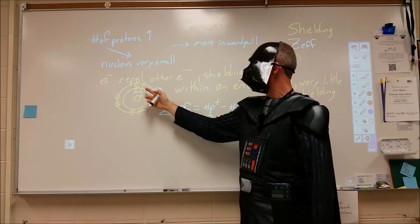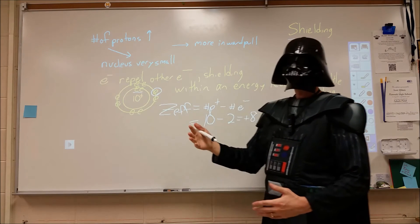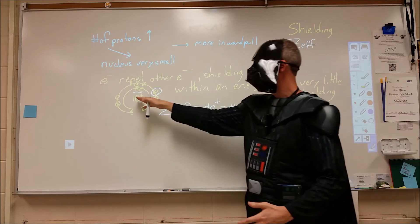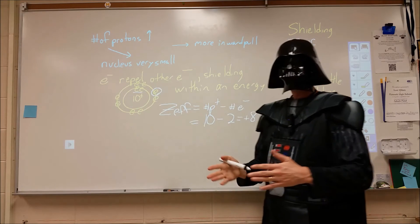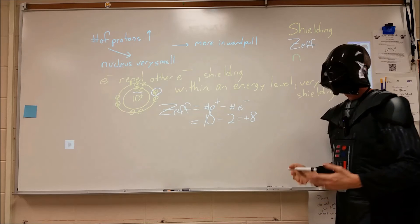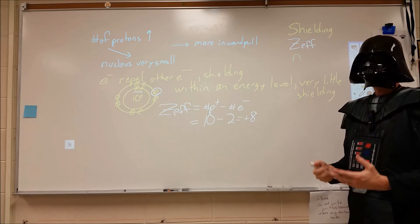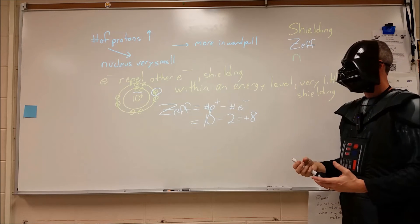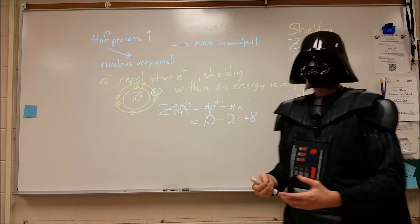Because often the number of electrons shielding will increase as will the number of protons attracting. And if they do so in a way where they both go up by a similar amount, we can often ignore most of that because there tends to be a net effect of almost nothing.